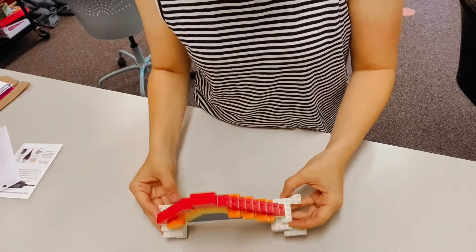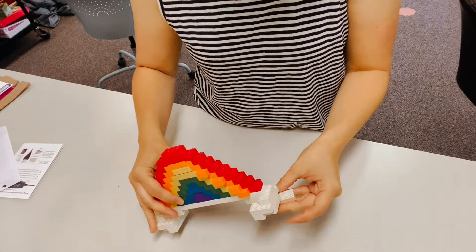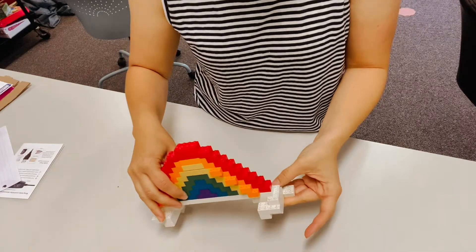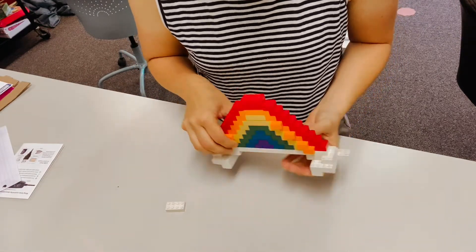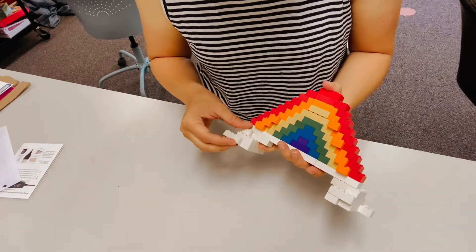All right everybody, today we were supposed to be making kitty Legos, but when we tried to make the Legos, we realized that a lot of the pieces that we had you probably wouldn't have at home. So what we decided to do instead was make a cute little rainbow.